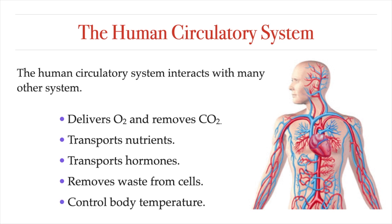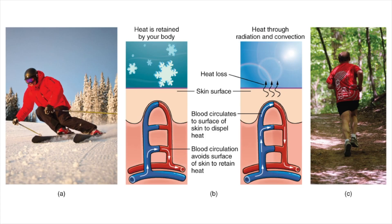Another function of our circulatory system is the role that it plays in controlling temperature regulation. Our blood can deliver heat throughout the body from the core or inside of the body to the surface and vice versa. So by adjusting how much blood can flow to the skin, the body can control how much body heat can be lost to our surroundings and how much body heat is conserved.